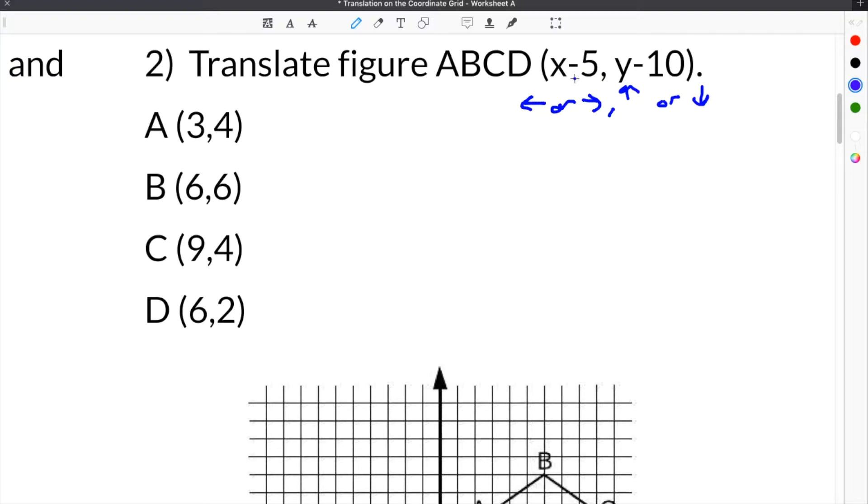So if it's x minus 5, that means we know it's going to go left, because any time you subtract from the x, it's going to move left. And because we're subtracting five, it's going to go left five. And then y minus 10, that is also subtracting from y. So that means it's going to go down 10 in the y value.